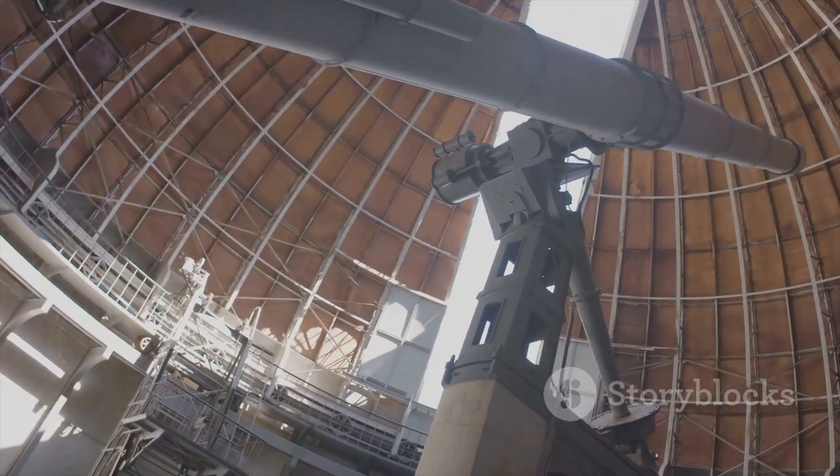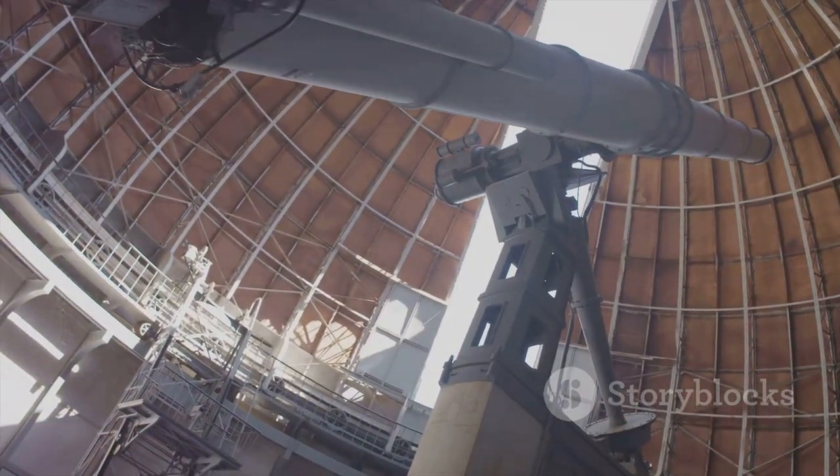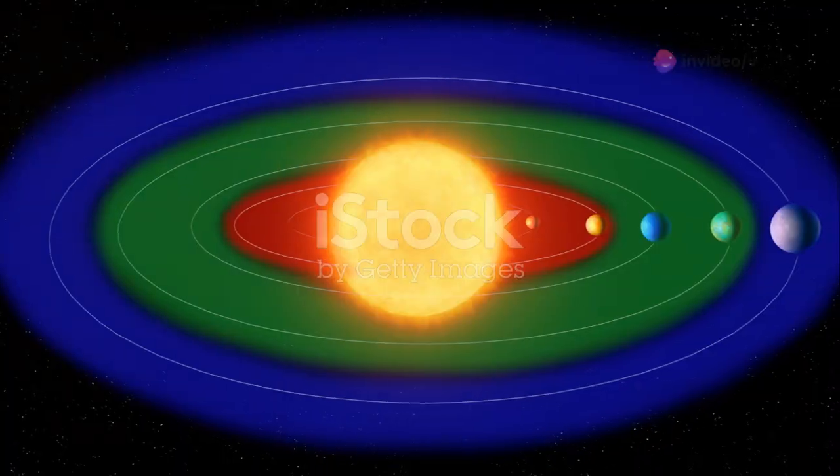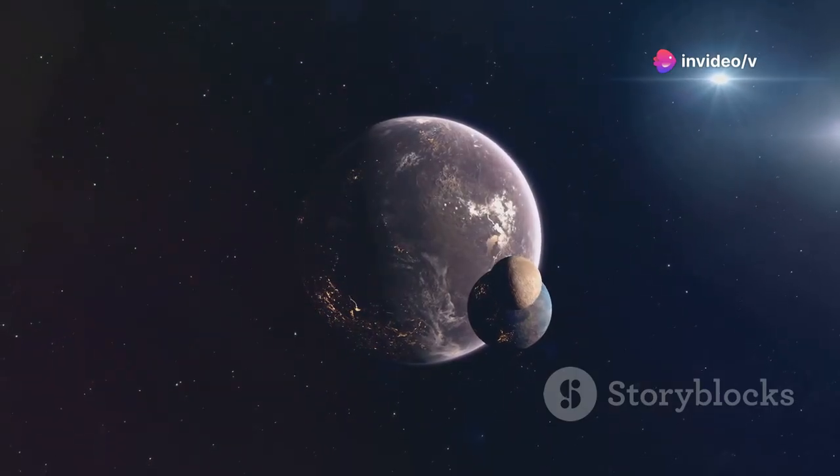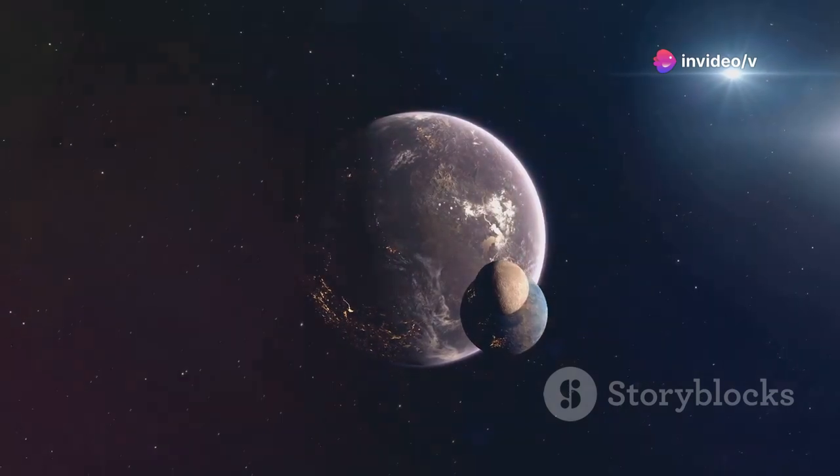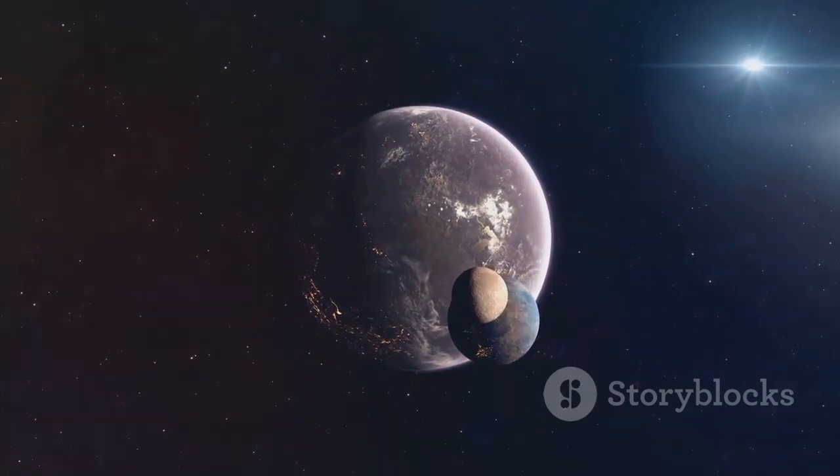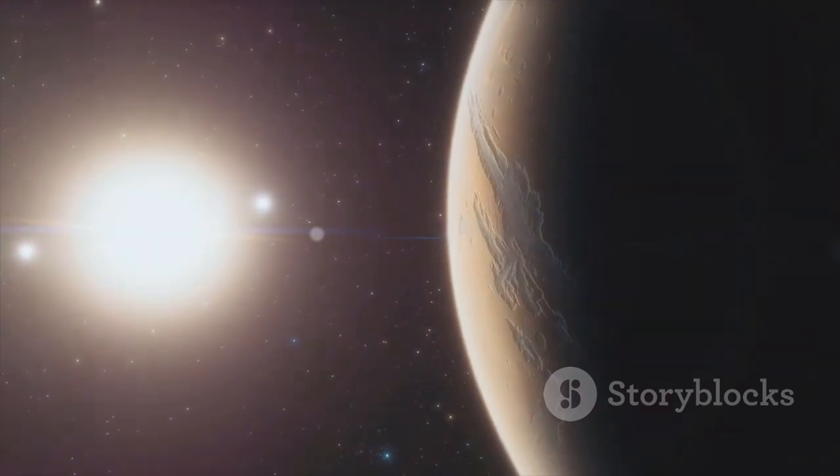Our voyages into the cosmos have yielded the discovery of thousands of these exoplanets, with a number of them residing in the just-right conditions, known as the habitable zones of their host stars. These are the areas around a star where it could potentially support life as we know it.